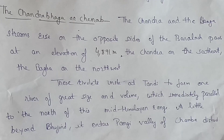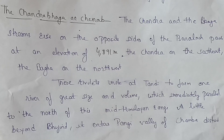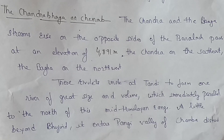The next river in Himachal Pradesh is Chandra Bhaga, also known as Chenab. The Chandra and Bhaga streams rise on opposite sides of the Baralacha Pass at an elevation of 4,891 meters — the Chandra on the south-east and the Bhaga on the north-west.